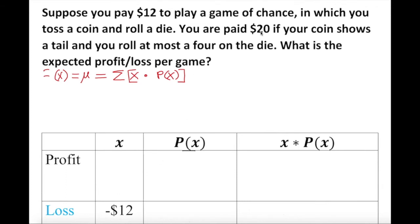But you are paid $20, so what is the difference? The difference is $8. So $8 is our profit as the discrete random variable. Remember, in these types of problems: what you pay is the loss, and the difference between what you get back and what you paid is your profit.